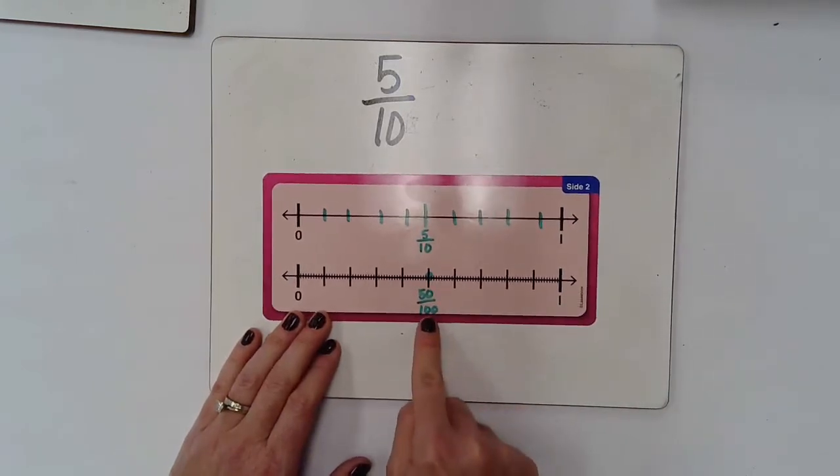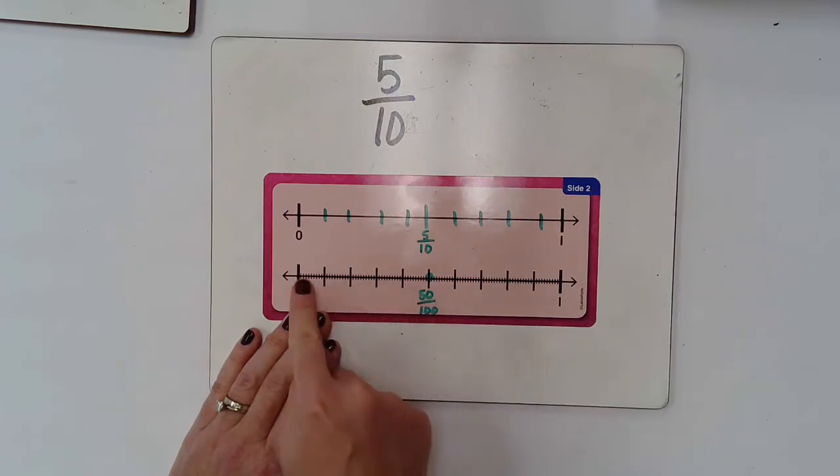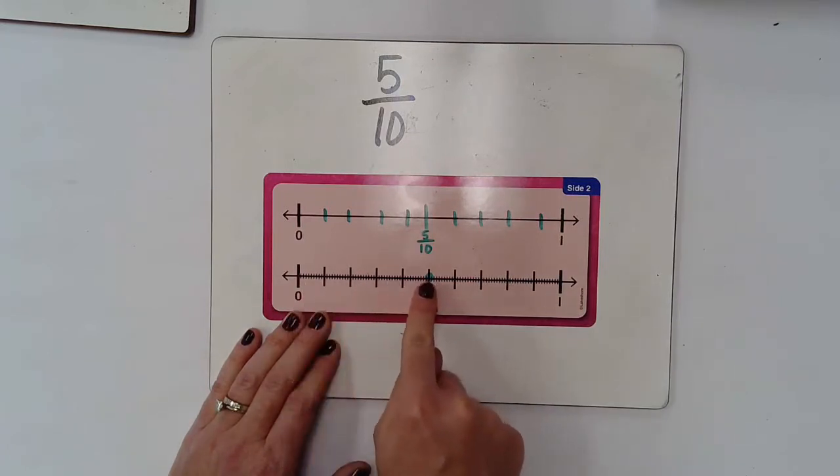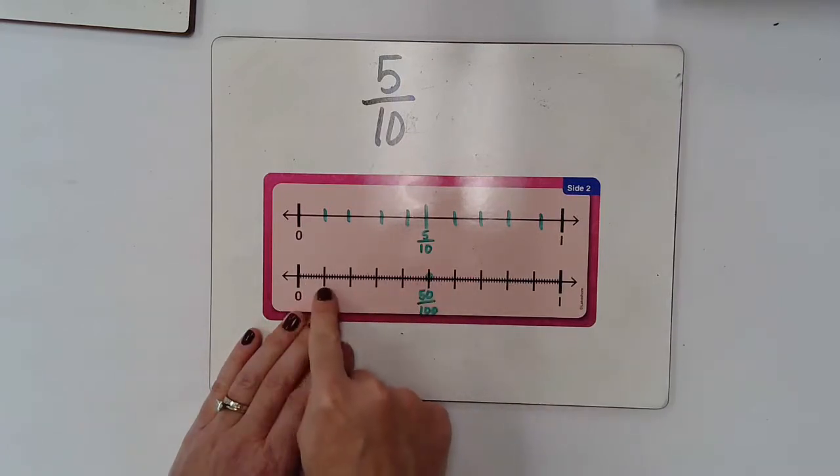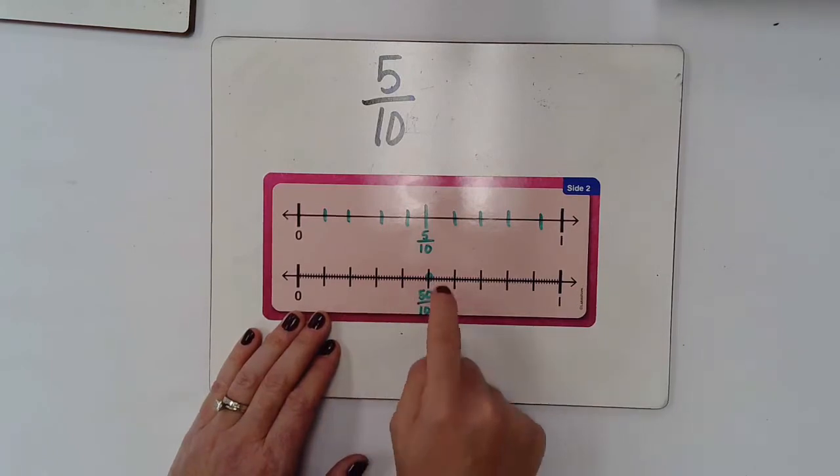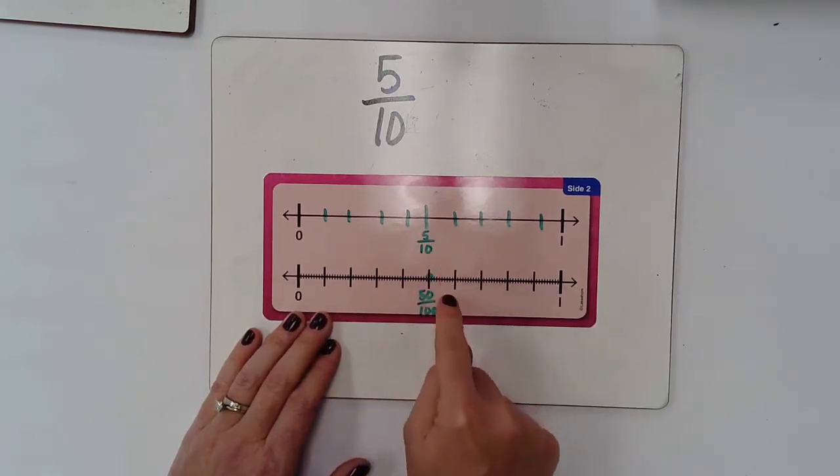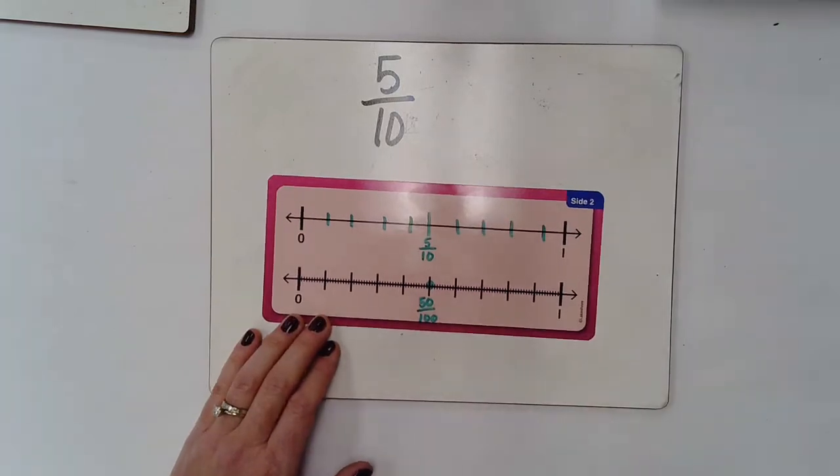So that gives me the denominator of a hundred. And then if I count up all these little tiny lines or if I count up by my tens—ten, twenty, thirty, forty, fifty—I know that an equivalent fraction for five tenths would be fifty hundredths.